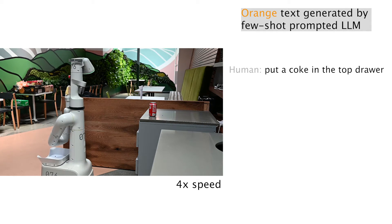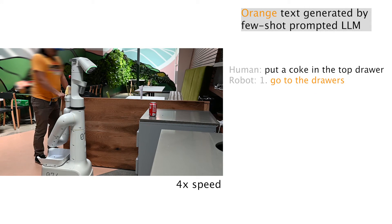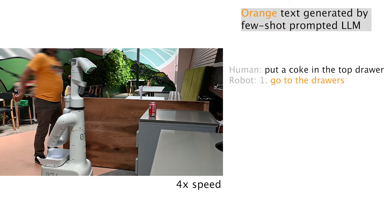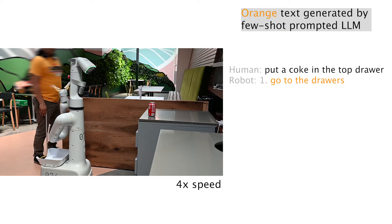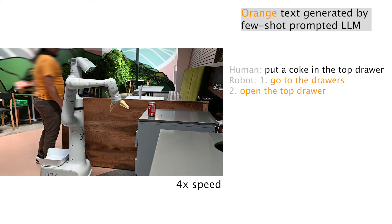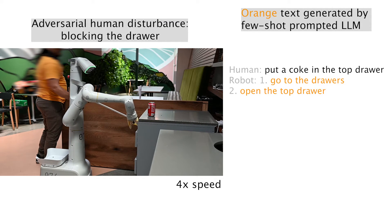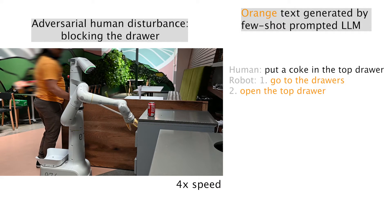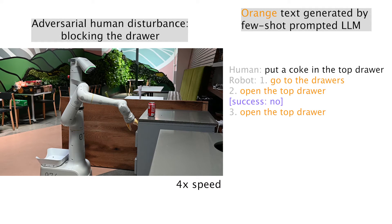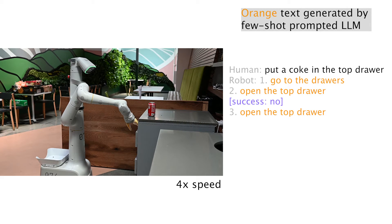The third domain is real-world mobile manipulation. Here the task is to put a coke in the top drawer. The robot first goes to the drawer and tries to open the drawer. However, a human operator forces a policy failure, and the robot tries it again and succeeds during the second time.